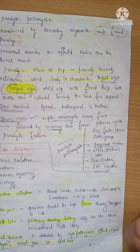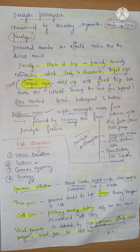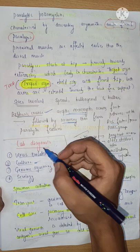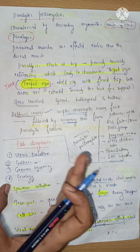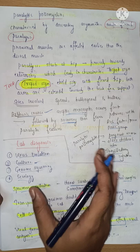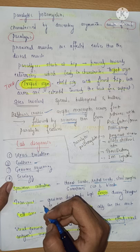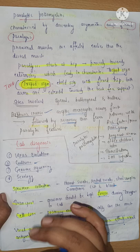Now let us look into the lab diagnosis. Lab diagnosis is very important. You need to mention the diagnosis under the following headings: virus isolation, culture, genome sequencing, and serology. If you mention it in a flow chart under these headings it will be impressive for the examiner. The first thing you have to do is collect the specimen.